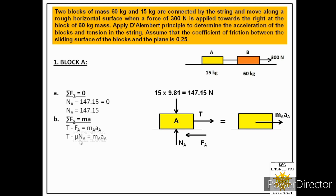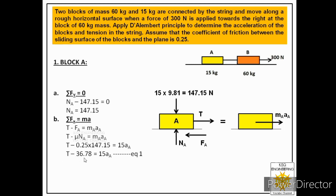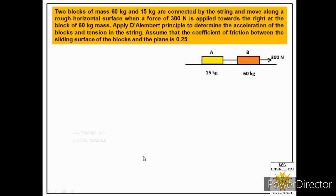We replace friction FA with μ·NA. We know μ equals 0.25, NA equals 147.15 N, and mass of block A is 15 kg. Substituting: T minus 0.25 times 147.15 equals 15·a_A, which reduces to T minus 36.78 equals 15·a_A. This equation has two unknowns — tension T and acceleration a_A — so we call this Equation 1 and move on to the free body of block B.